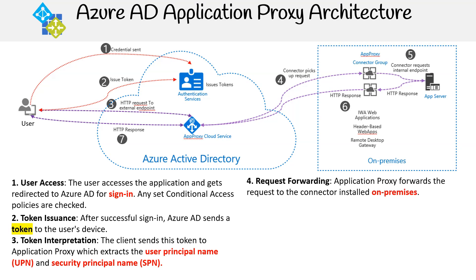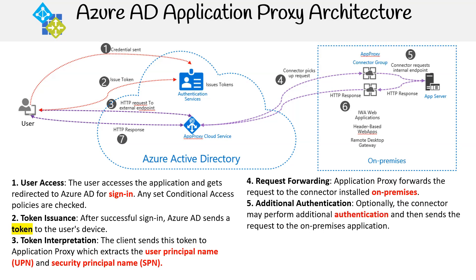Step four is request forwarding: Application Proxy forwards the request to the connector installed on-premises. Step five is additional authentication: optionally, the connector may perform additional authentication and then sends the request to the on-premises application.